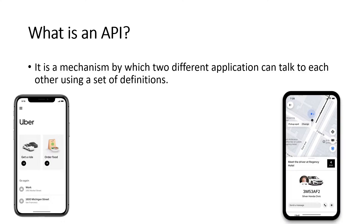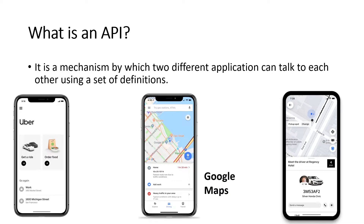You can see all the location details on the map. Now the question is: did Uber create this whole mapping system themselves? The answer is no. They are using Google Maps — the most popular mapping application on our phones, whether iPhone or Android. So this Google Maps service is used by Uber inside their application. That's how two different applications — Uber and Google Maps — are connected to each other.